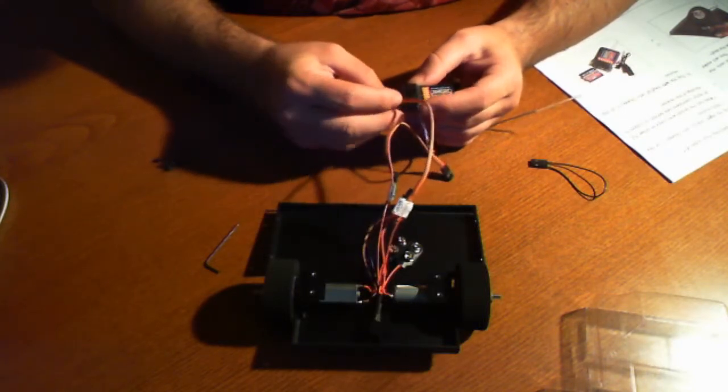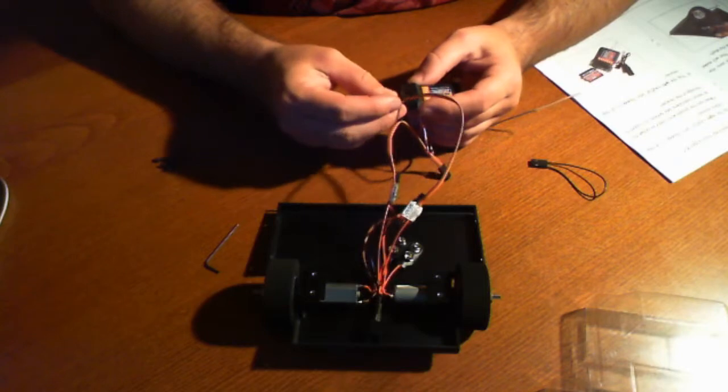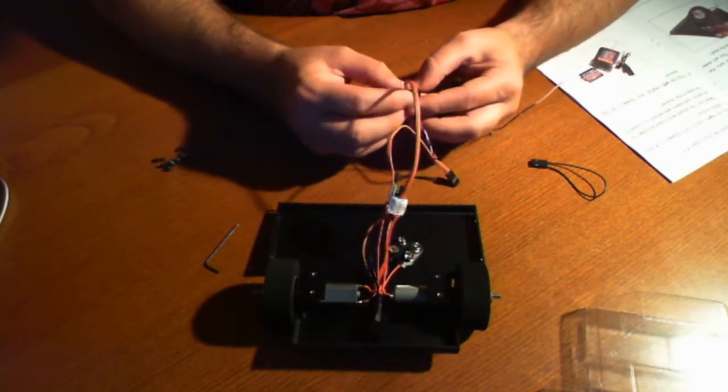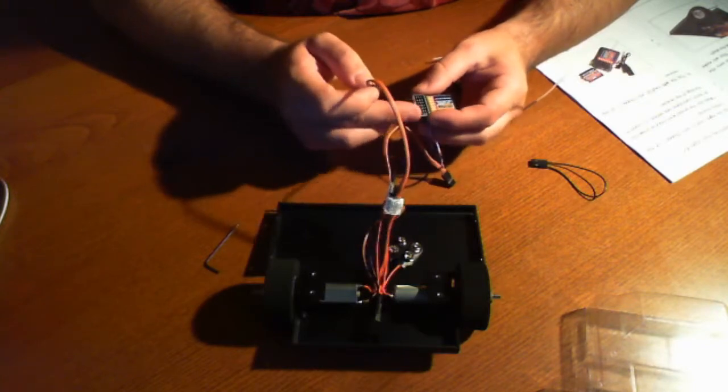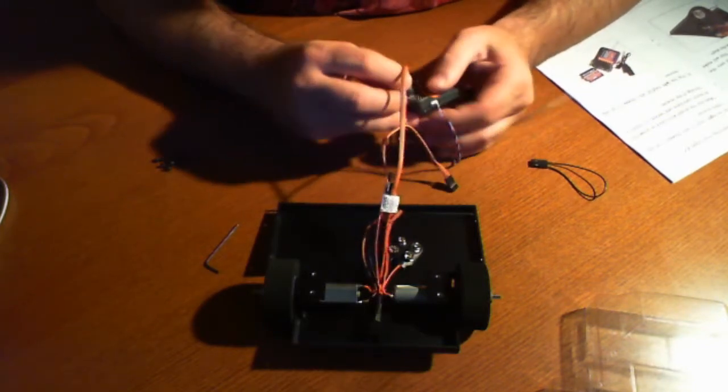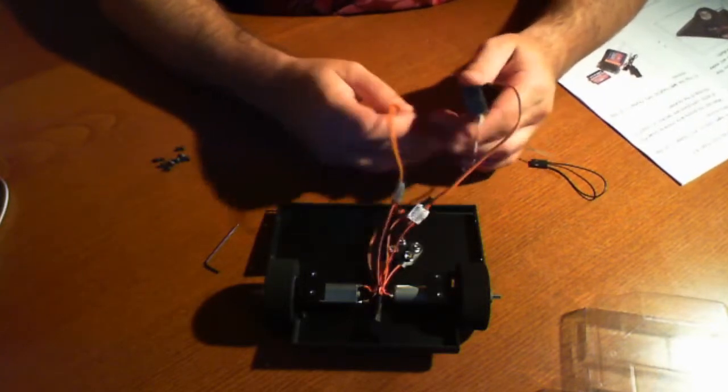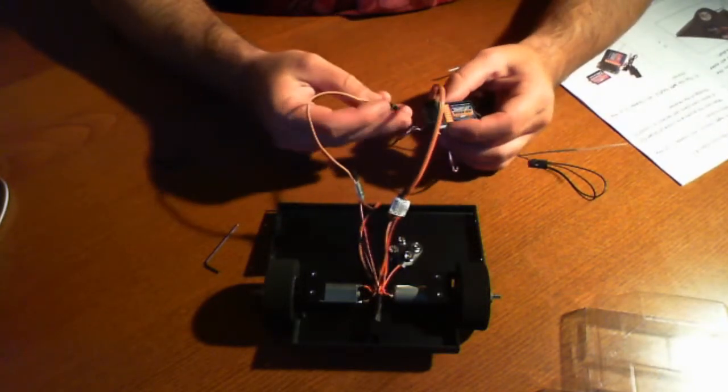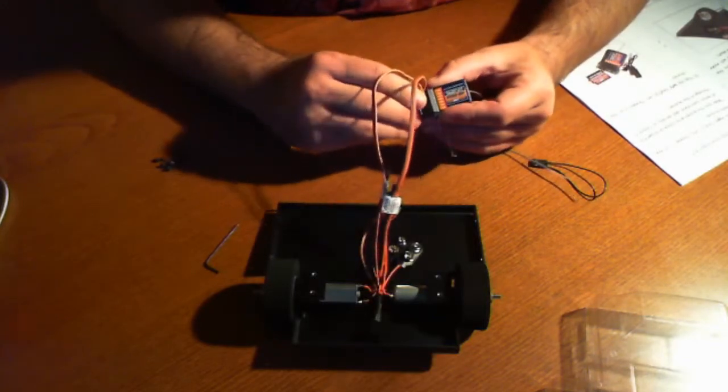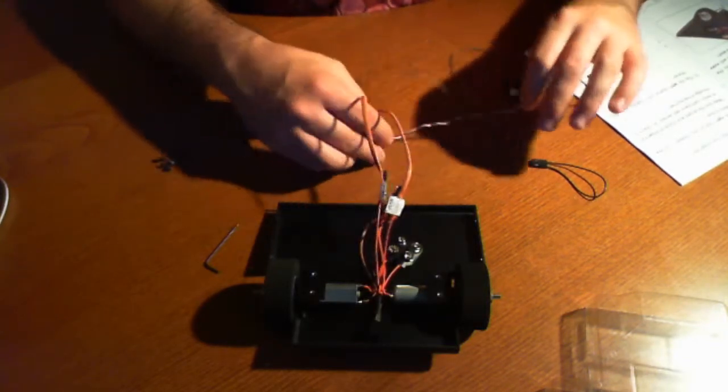Now what it says to do is to make sure that the black or brown, so in this case this one's brown, is closest to the edge of the receiver. So the edge is going to be out here. So we're going to make sure we're plugging in like so. That plugged in pretty easily. And we're going to go ahead and plug in channel two for the left one. And that's it. We're plugged in.